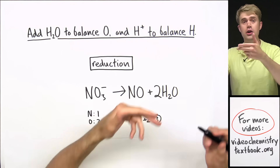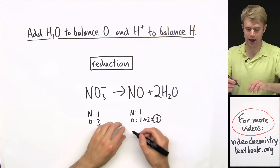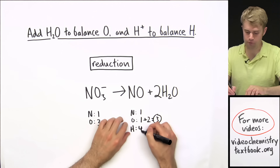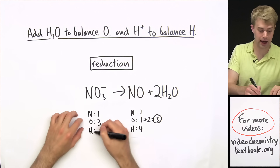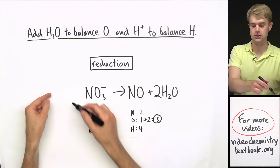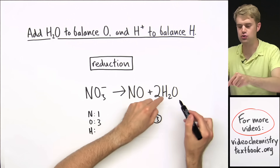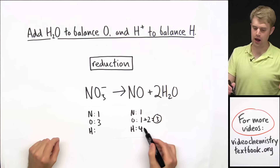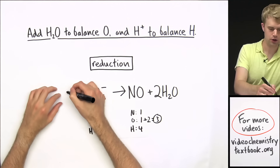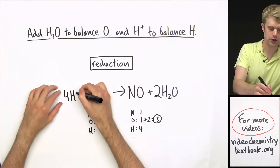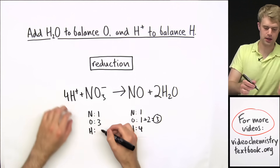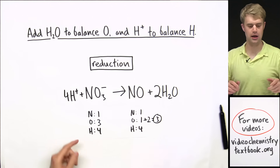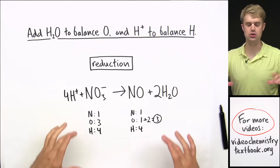By introducing water, we've added hydrogen to the equation. On the product side, we now have two times two — four hydrogens — and we don't have any hydrogens on the reactant side. So to balance the hydrogens introduced by water, we add 4 H⁺ to the reactant side. Now we have four hydrogens on both sides. So nitrogens, oxygens, and hydrogens are all balanced.